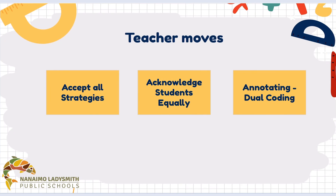As students share, we dig into our bag of tricks for teacher moves and accept all strategies. We want all student thinking to be valued, and one way to do this is to acknowledge students equally — not getting overly excited about one student's strategy even if it lands exactly where you want the class to go. The last move is annotating, getting student thinking up on the board so everyone can see and connect their thinking with another student's thinking, maximizing all the knowledge in the room.